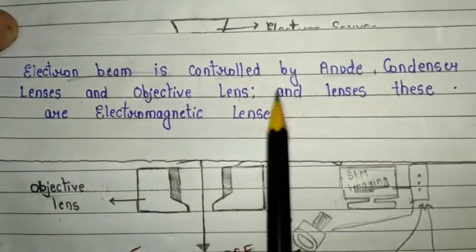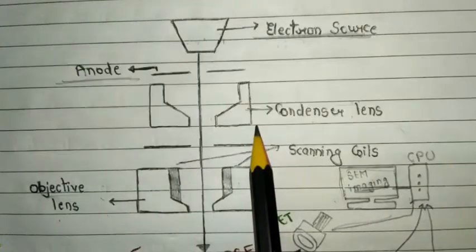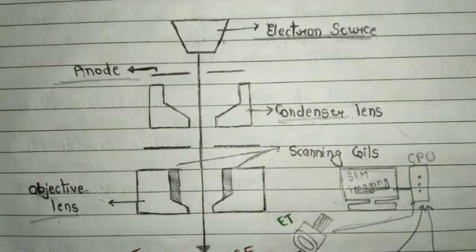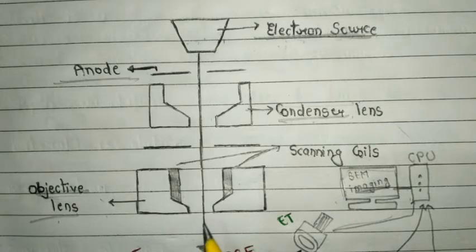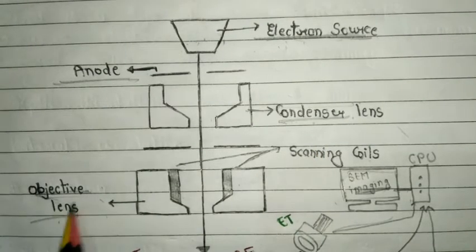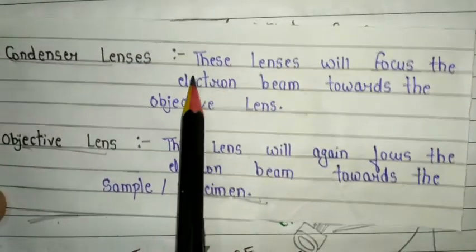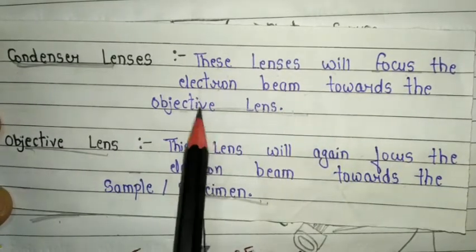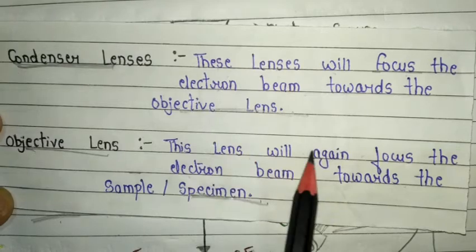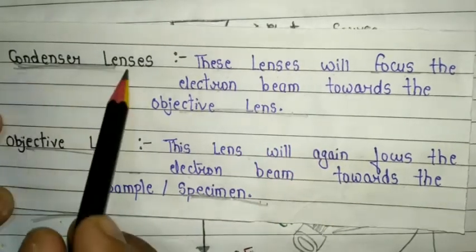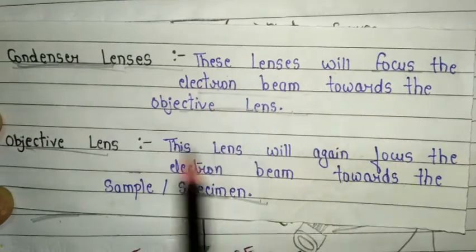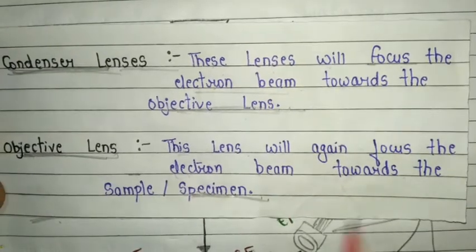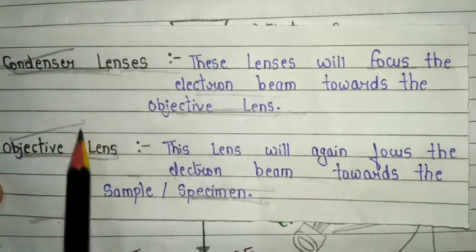Condenser lens and objective lens are electromagnetic lenses. Two types of lenses are used: condenser lens and objective lens, and both are electromagnetic lenses. The condenser lens focuses the electron beam toward the objective lens. So after the electron gun produces the electron beam and the anode accelerates it, the condenser lens focuses the beam toward the objective lens. Then the objective lens again focuses the electron beam toward the sample specimen.